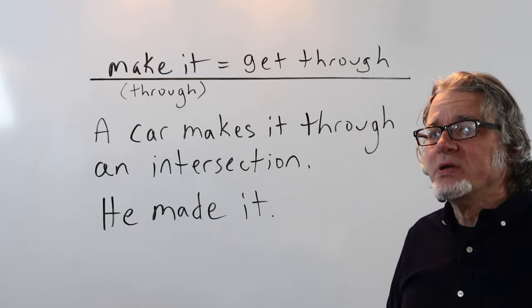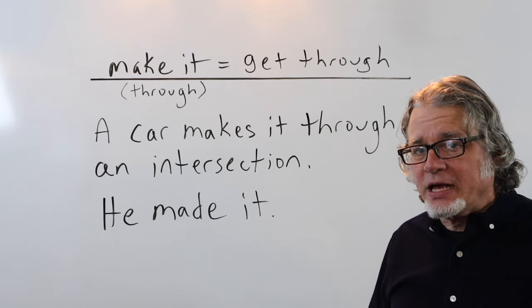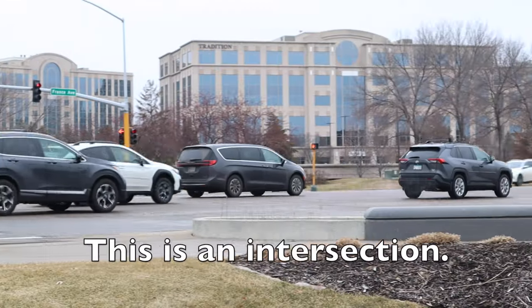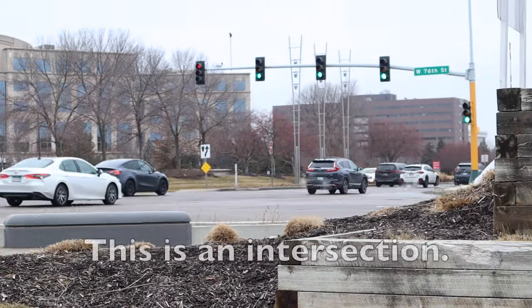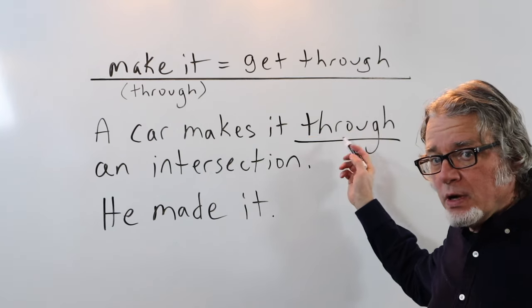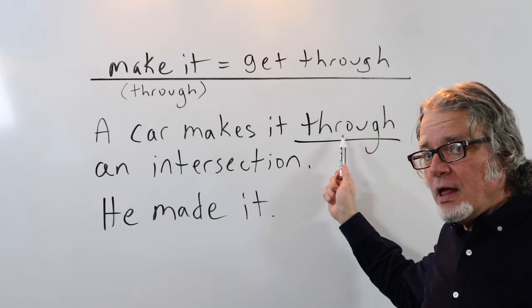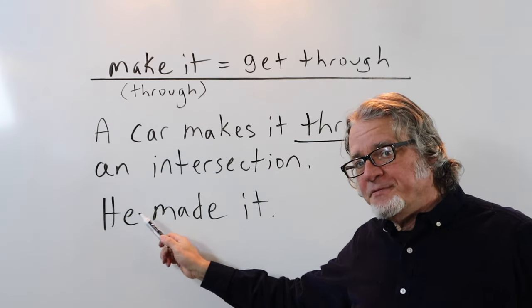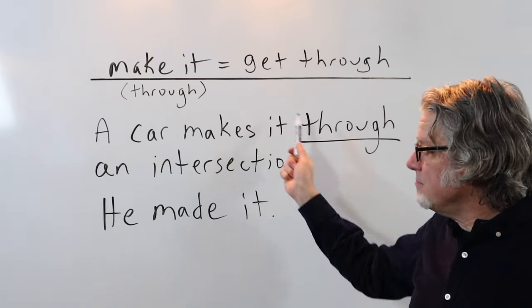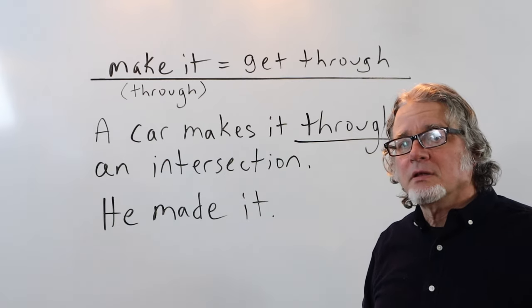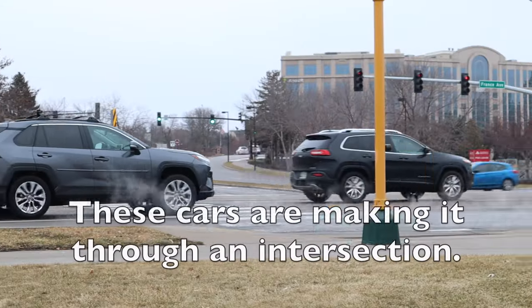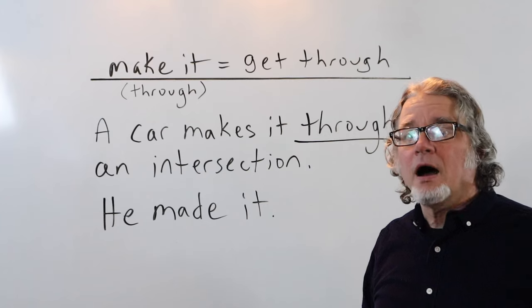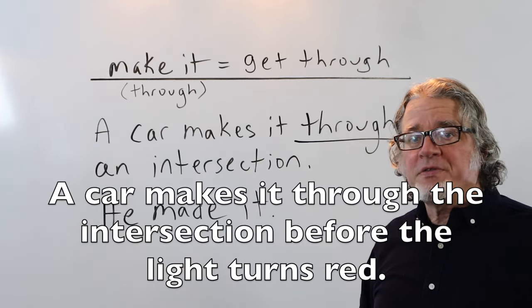Make it is similar to get through when talking about an intersection. A car makes it through an intersection. In this case you need through. This preposition will follow make it. And if you simply say he made it, it can mean all of this, that the car made it through the intersection.